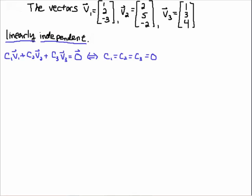So what does it mean to be linearly independent? It means that this linear combination of vectors, if you set it equal to the zero vector, then the only way that that could be true is for C1 to be equal to C2 to be equal to C3. In other words, the only way to make this true is if all these coefficients are zero.